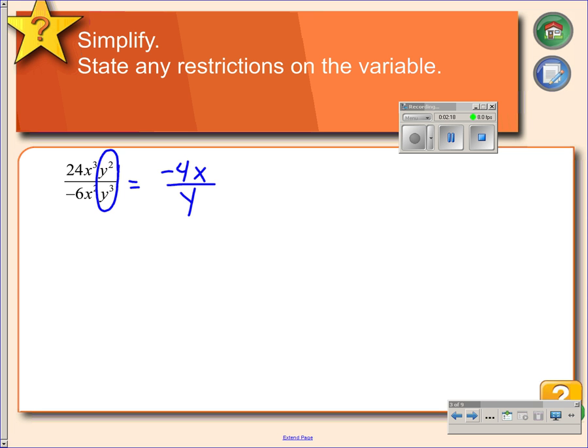For this one, we also want to state our restrictions. Since we have two different variables in the denominator, we have to have restrictions for both. So what would make the denominator equal 0 is if x equals 0, so that's restricted. And if y is equal to 0, that would also make the denominator equal 0, so y cannot be equal to 0 either.